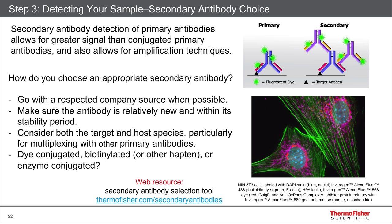Now, if you're combining with other primaries — for instance, one rabbit primary and one mouse primary — you want to make sure that your anti-mouse secondary is cross-absorbed against rabbit, so it doesn't cross-label your rabbit primary, and vice versa, that your anti-rabbit is cross-absorbed against mouse. You can usually look into the certificate of analysis for your antibody to know what it's cross-absorbed against, or in the manual for that antibody, or just call us at tech support.